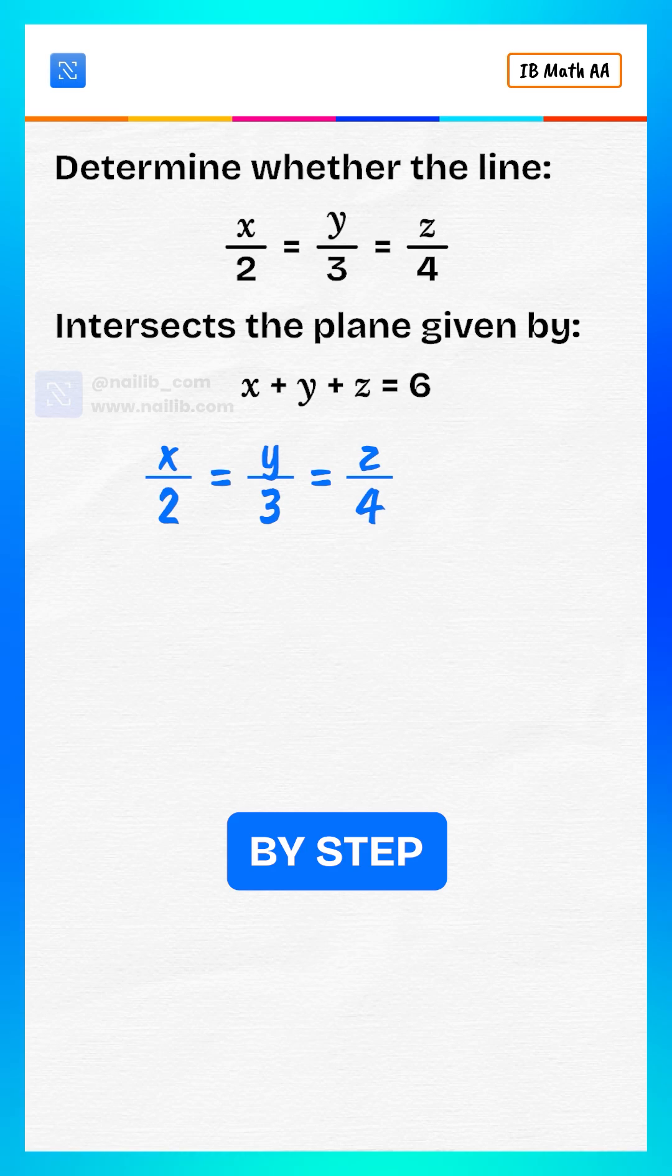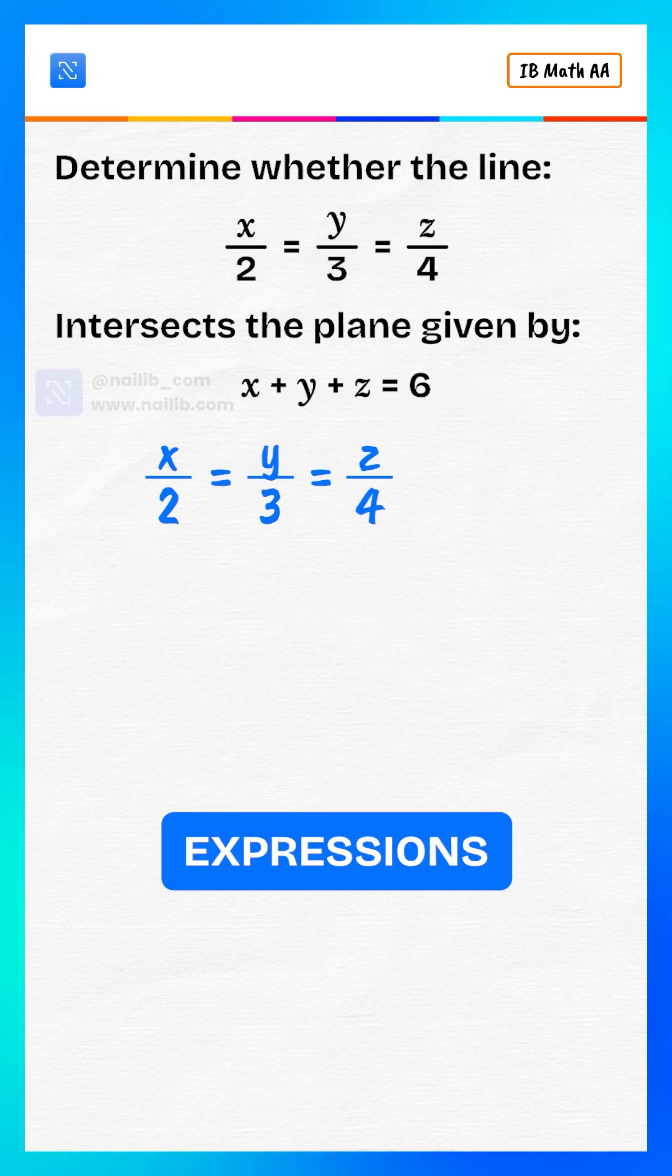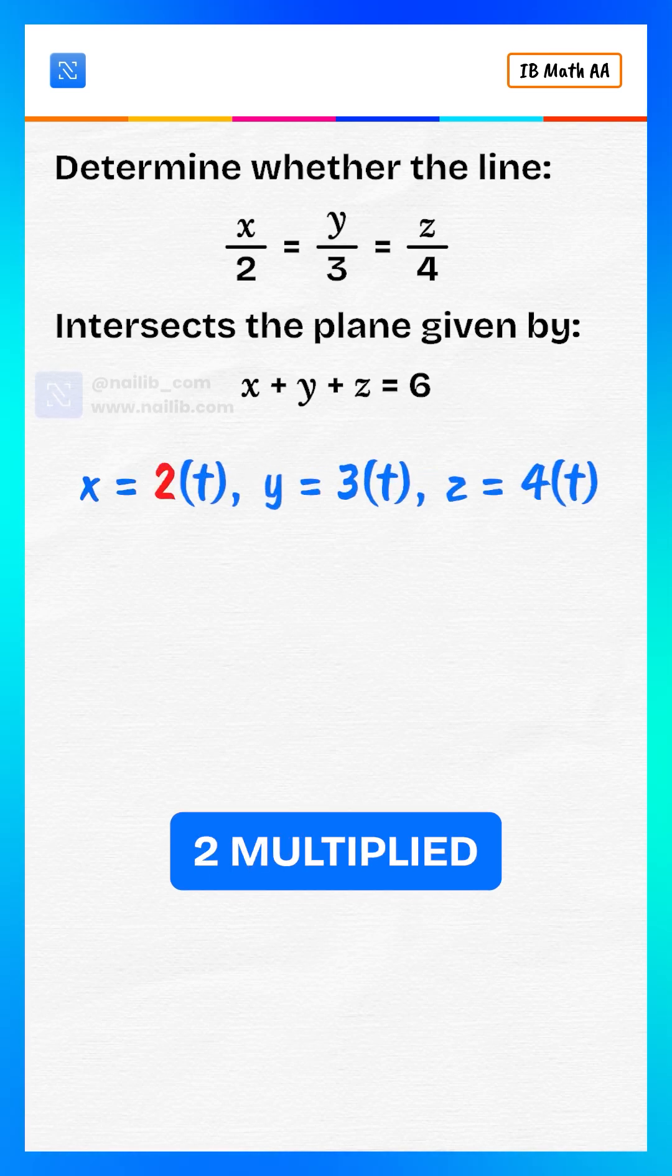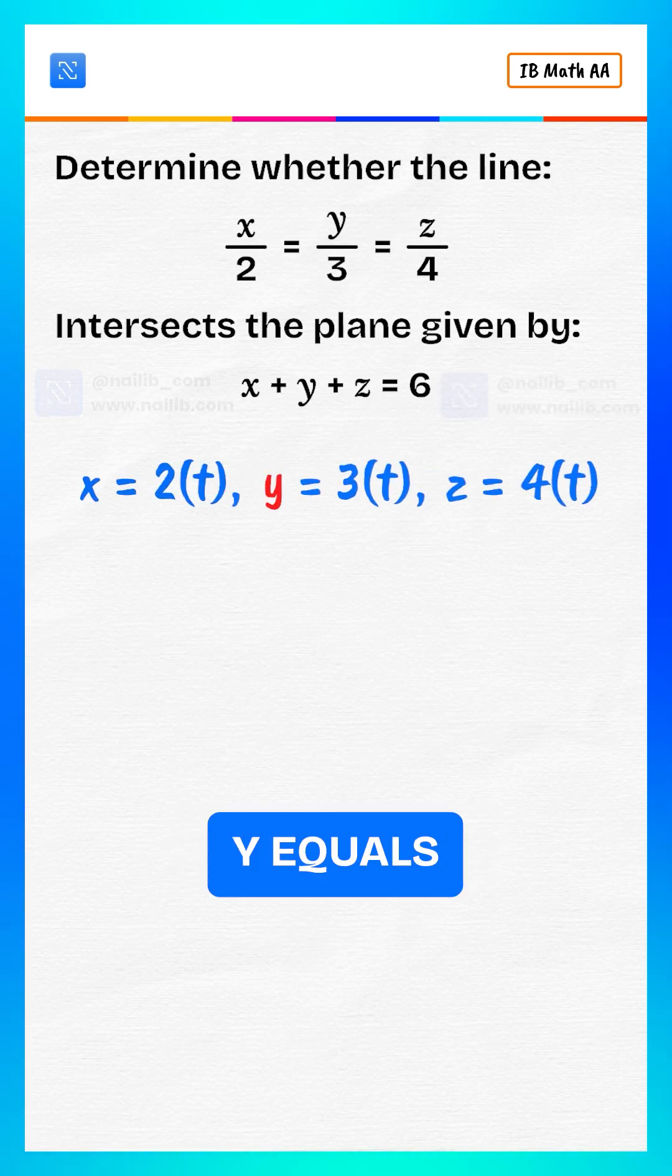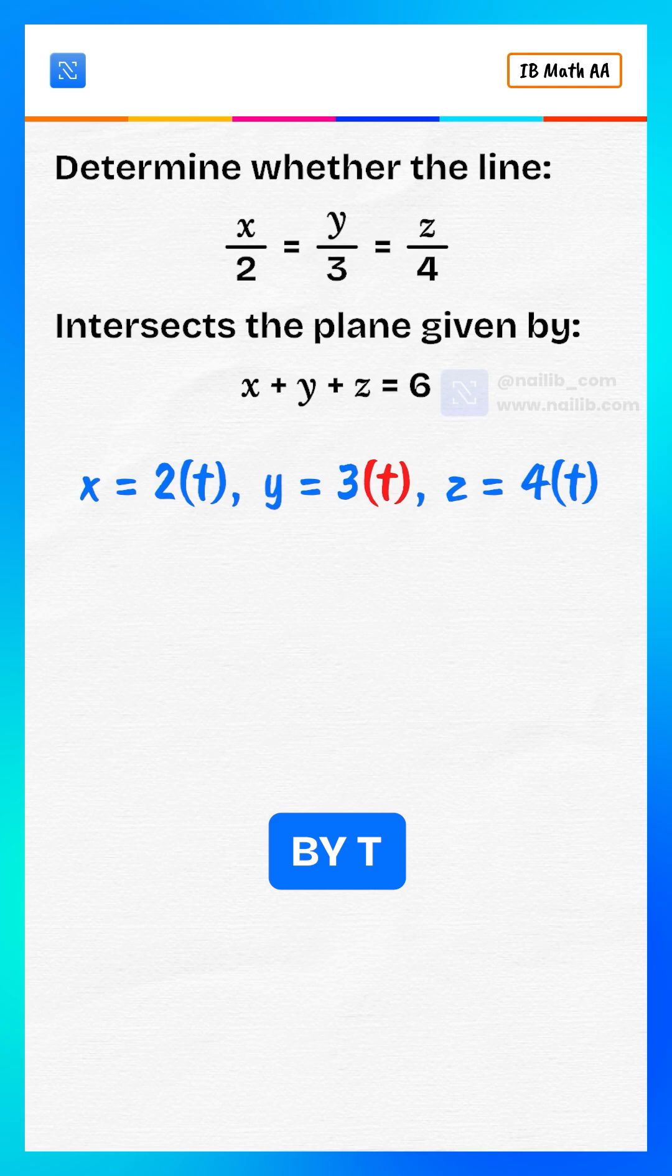Let's solve step by step. Let's say all three expressions are equal to a parameter named t. So, we get x equals 2 multiplied by t, y equals 3 multiplied by t, z equals 4 multiplied by t.